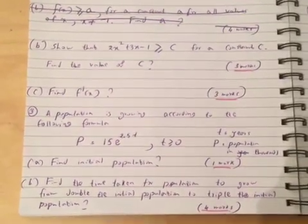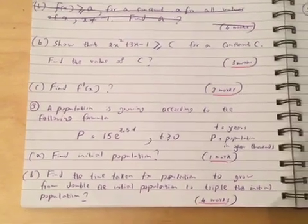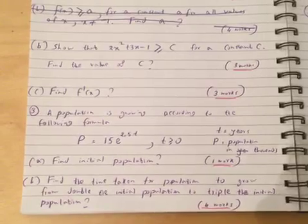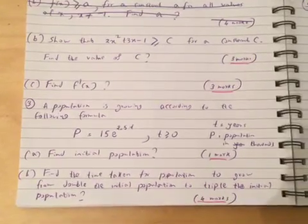Find initial population. Part b: Find the time taken for population to grow from double the initial population to triple the initial population.